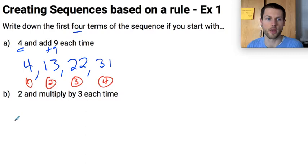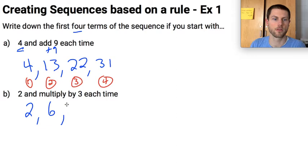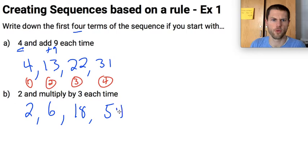Another example. I want to start with 2, but this time I want to multiply by 3 each time. So here's my first number, 2, and then times 3 would be 6, and times 3 would be 18, and then times 3 would be... let's try that again. Two times 3 is 6, 3 times 6 is 18, and 3 times 18 is 54. I think I got that right.